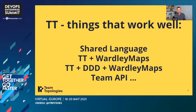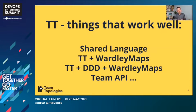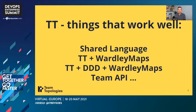To begin with, the things that are really working well: Team Topologies provides a shared language across the organization. The combination of Team Topologies and Wardley Maps is great for strategic thinking. The combination of Team Topologies, Domain Driven Design (DDD), and Wardley Maps is great for thinking about the evolution of technology inside an organization. And the Team API concept from Team Topologies seems to be really helping teams interact and make things work.